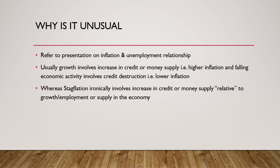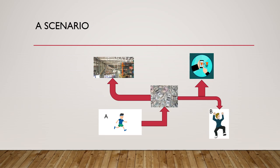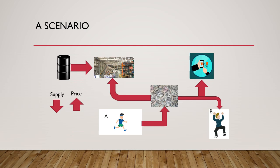That's why stagflation is unusual. Let's look at a scenario: suppose a very important input product in economic activity somehow observes a supply decline. The prices of that key input product would rise, increasing the cost of production of goods in the economy. To produce the same amount of goods, you need more credit, so the credit requirement goes higher, and for the same supply there is a price rise.